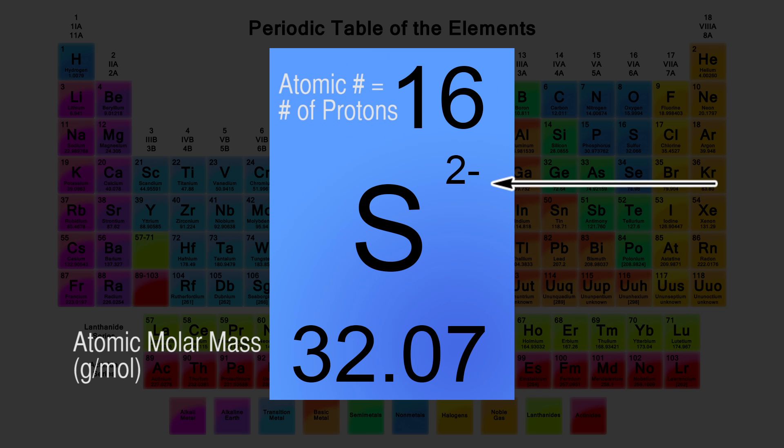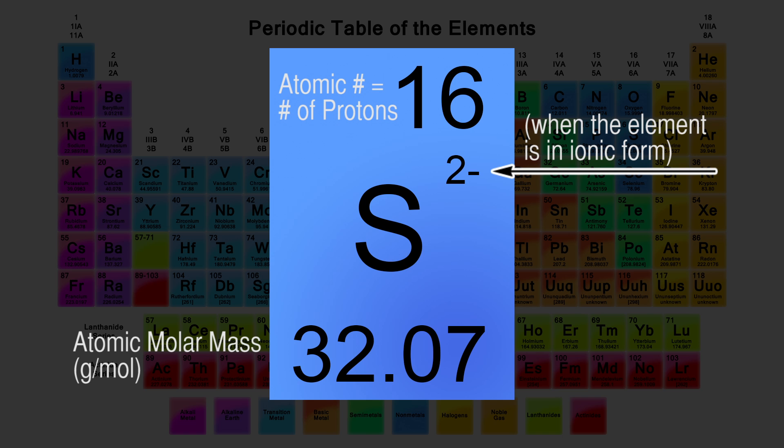Some periodic tables also indicate a charge when the atom is in ionic form in a solution. This charge is based on the off-balance between protons and electrons. Since the quantity of protons never changes, the number of electrons either increases or decreases.